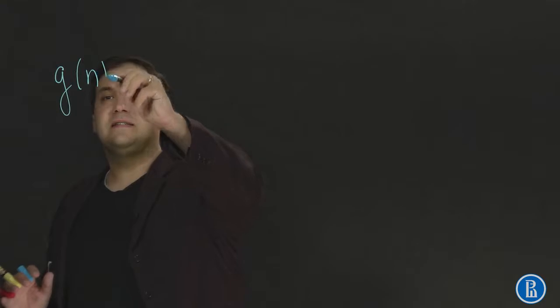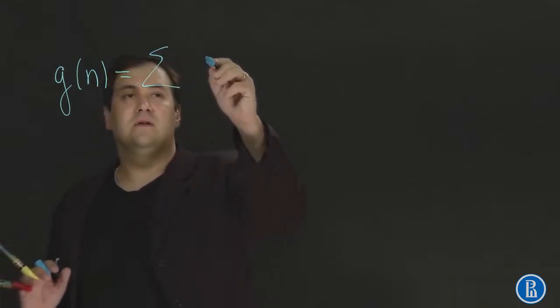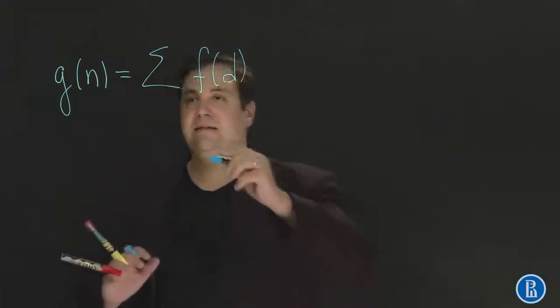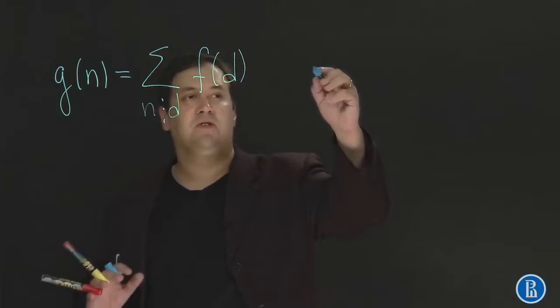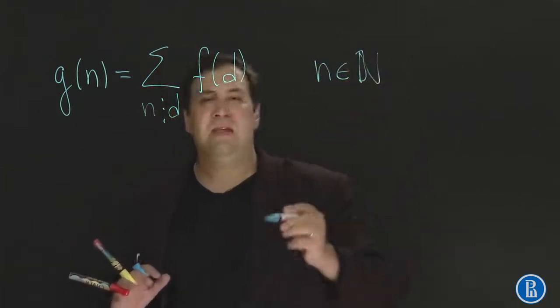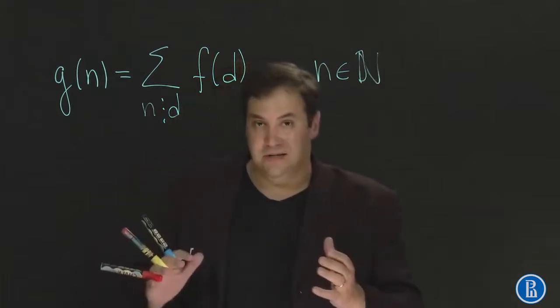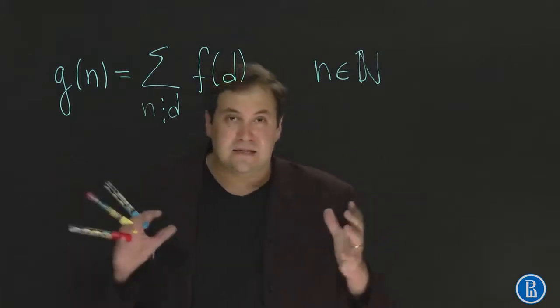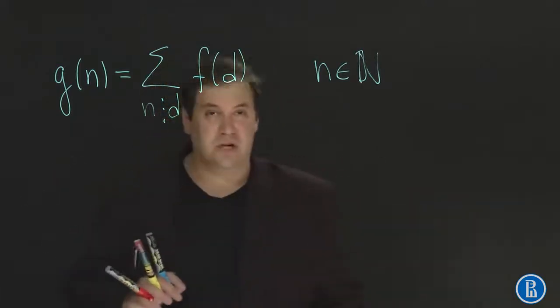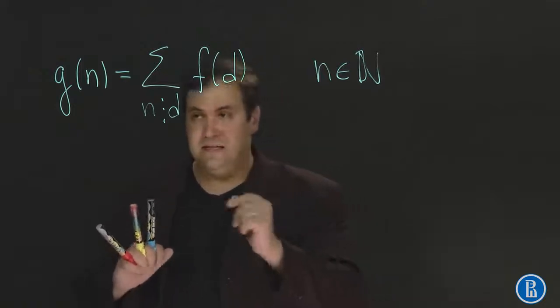Recall that this formula deals with arithmetic functions, which means that we have function f defined on positive integers, and function g defined as the sum of values of function f taken at divisors of n. So n is an arbitrary positive integer and we take all its divisors.